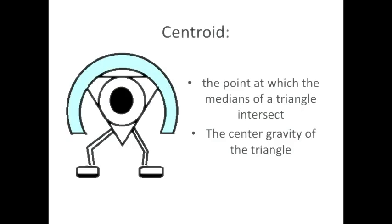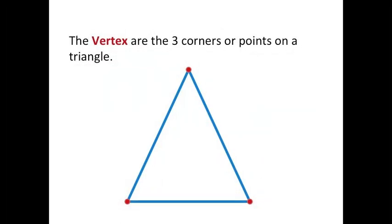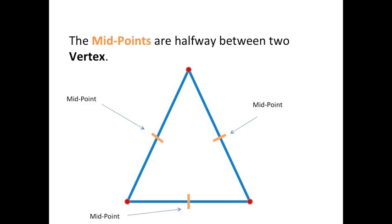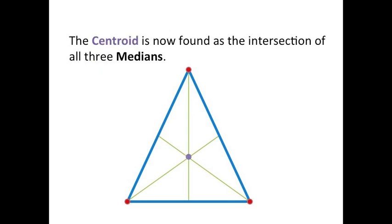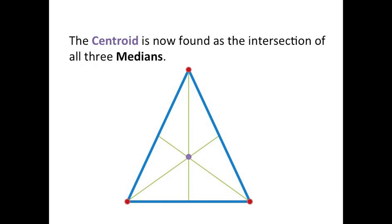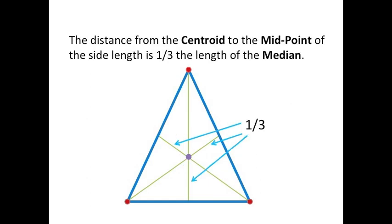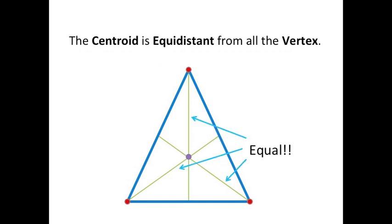Here's what we know about finding the centroid. First, we need to know the vertices are the three corners or points on a triangle. The midpoints are halfway between two vertices. The medians are drawn from the vertex to the opposite midpoints. The centroid is the intersection of all three medians. The distance from the centroid to the vertex is two-thirds the length of the median, meaning the distance from the centroid to the midpoint is one-third the total distance, and the centroid is equidistant from all vertices.